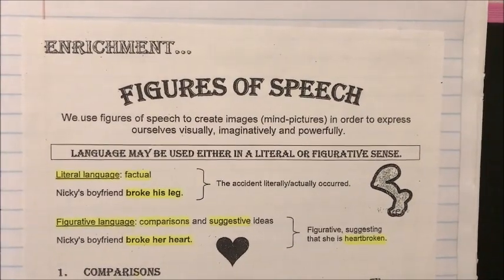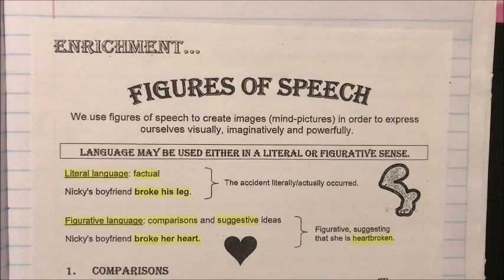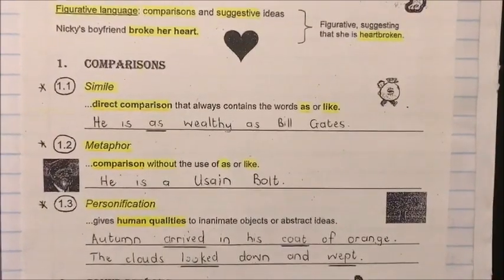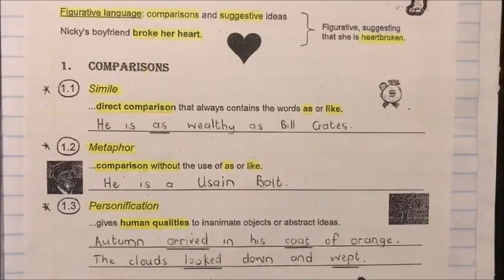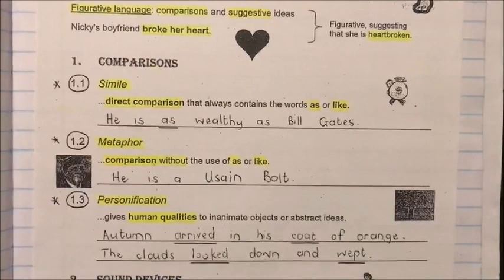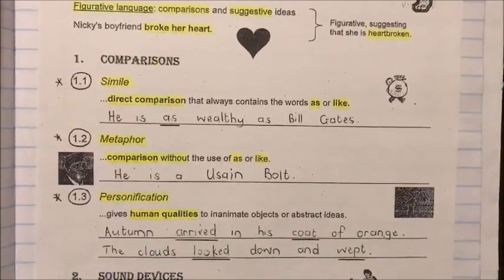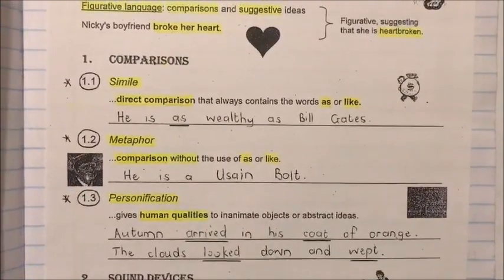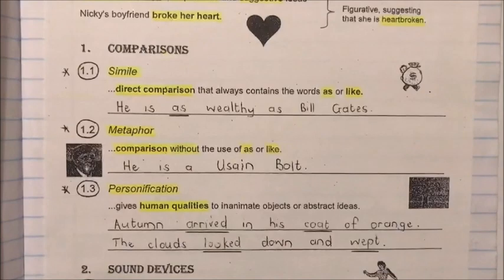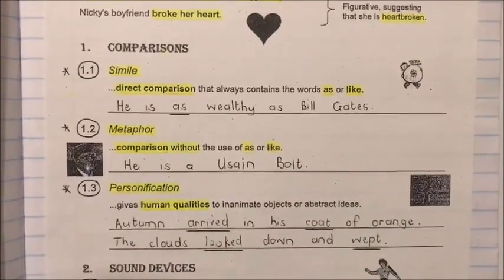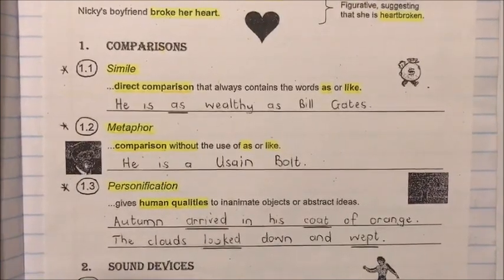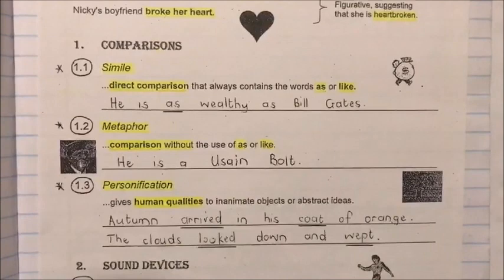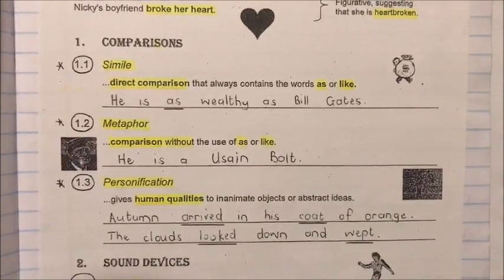This is important when you have to determine the meaning or the message of the poem — is the poet being literal or figurative? Looking at the three common examples of comparisons: a simile is a direct comparison that always contains the words 'as' or 'like.' A metaphor is a comparison without the use of 'as' or 'like.' For example: 'He is as wealthy as Bill Gates' uses a simile, while 'He is Usain Bolt' is a metaphor. In both sentences you are comparing the person to someone else.